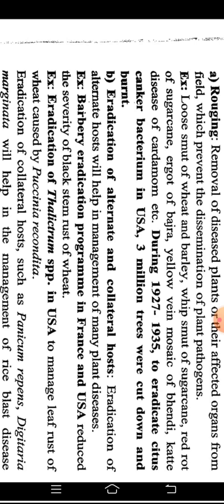The second method for eradication is the eradication of alternate and collateral hosts. This is helpful for managing many plant diseases. The Barberry eradication program in France and the USA reduced the severity of black stem rust of wheat. Eradication of Thalictrum species in the USA helped manage leaf rust of wheat caused by Puccinia recondita.